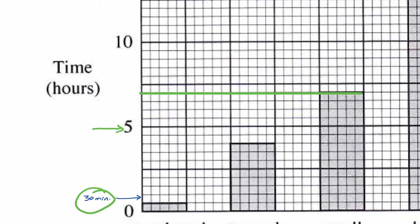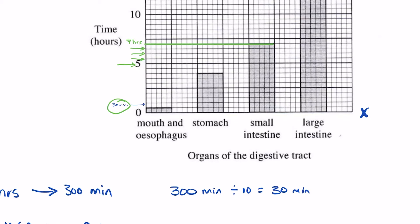So we'll count it as five hours here, five hours and a half or five and a half hours, six hours, six and a half hours, and seven hours. So the time spent in the small intestine is seven hours.